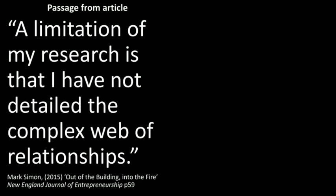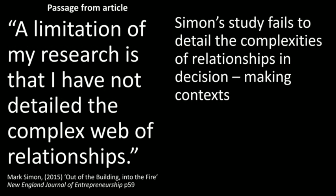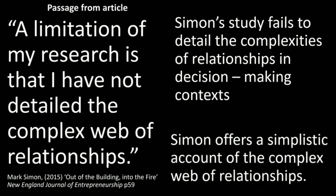In this passage, Mark Simon states: 'A limitation of my research is that I have not detailed the complex web of relationships.' He has given us a critique — we didn't have to invent one. So we turn Simon's confession into our critique: 'Simon's study fails to detail the complexities of relationships in decision-making contexts,' or 'Simon offers a simplistic account of the complex web of relationships.' You will need to go much more in depth and explain why Simon's simplistic account is problematic.